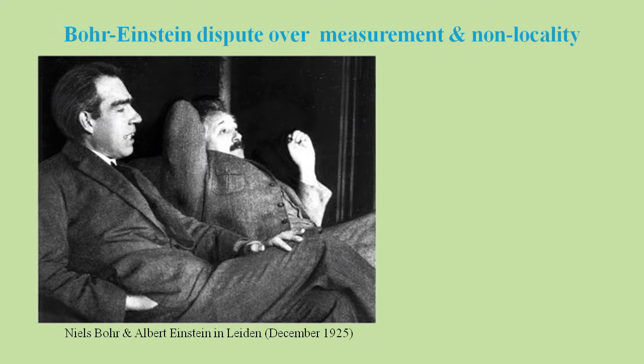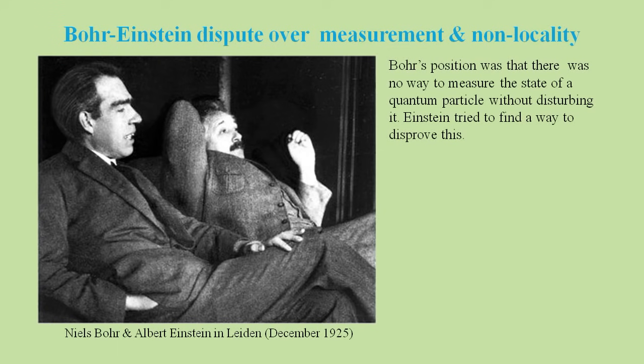During the 1920s and 30s, Niels Bohr and Albert Einstein held a series of public debates about quantum mechanics. In particular, these debates questioned an element of quantum theory called non-locality. Bohr's position was that there was no way to measure the state of a quantum particle without disturbing it, and Einstein wanted to disprove this.